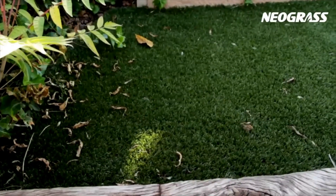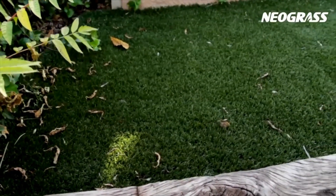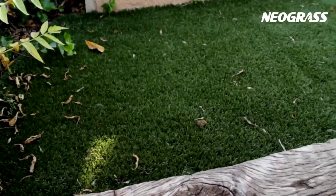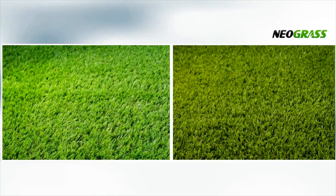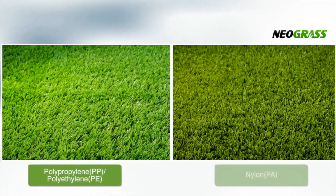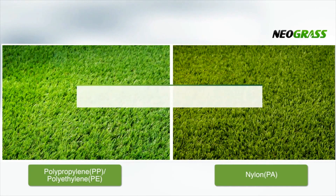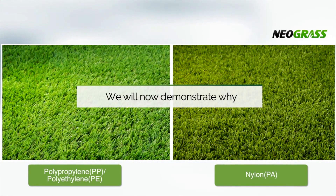Artificial grass can be manufactured from three types of raw material: polypropylene, polyethylene, or nylon. To create the highest quality artificial grass, the only option is to use nylon. We will now demonstrate why.